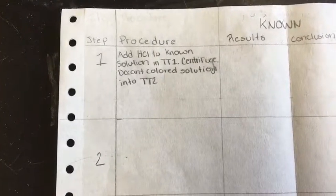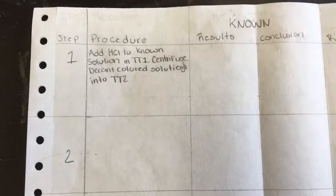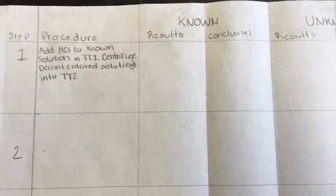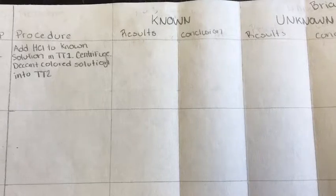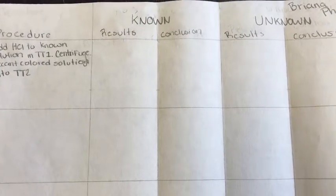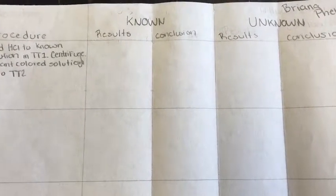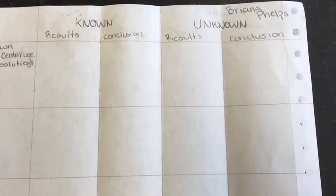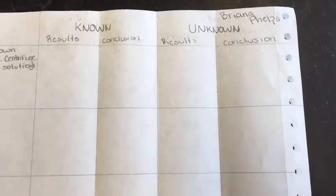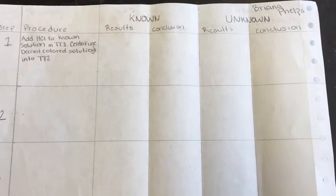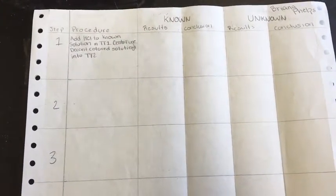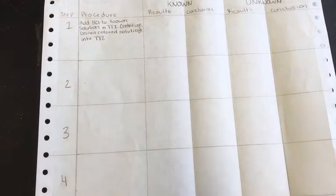So this is your data table, and you are going to label it steps one through fifteen, excluding eight. You're going to write a brief procedure down before you actually do the procedure, so that you have a good mindset of what you need to get done. In your knowns box, you're going to be very specific in your results, because it will help you later on in your unknown. They both need to be very specific.